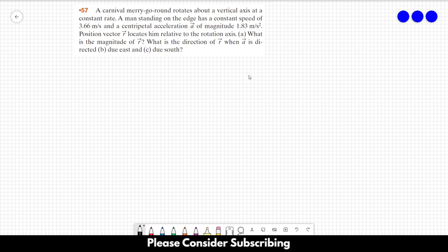Position vector R locates him relative to the rotation axis. Letter A: What is the magnitude of R? What is the direction of R when A is directed to east and to south?